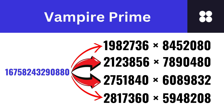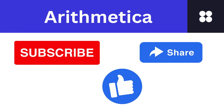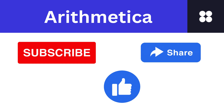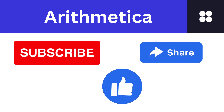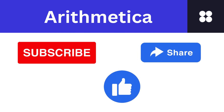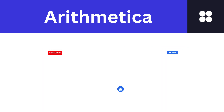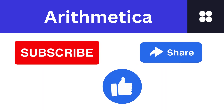Vampire numbers have this enchanting quality where the digits seem to dance and transform into the factors. They are like mathematical illusions that challenge our perception of numbers. Subscribe for more mathematical adventures, hit that like button if you enjoyed this video, and don't forget to share your thoughts in the comments below. Until next time, keep exploring and stay curious.